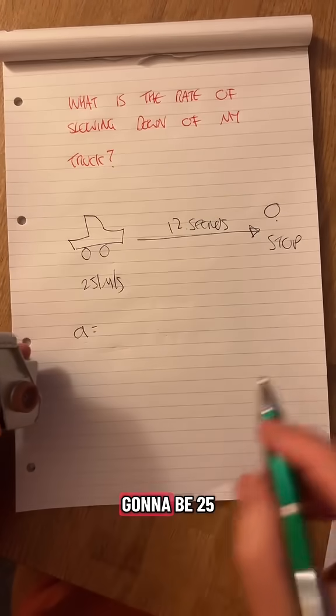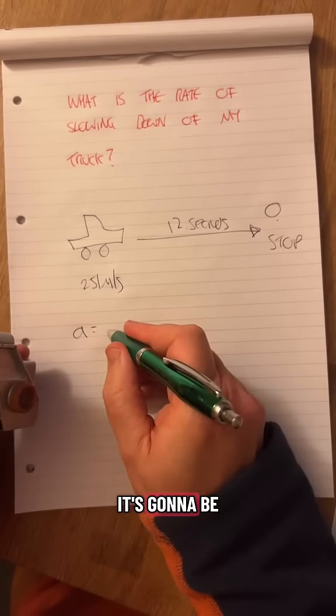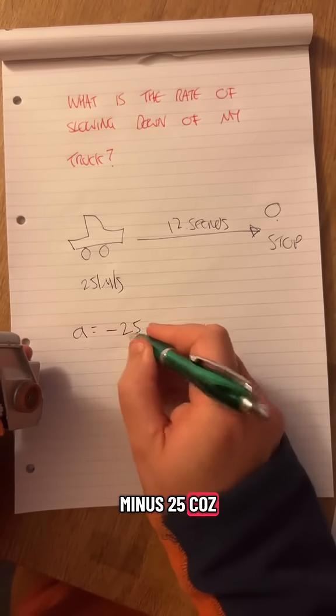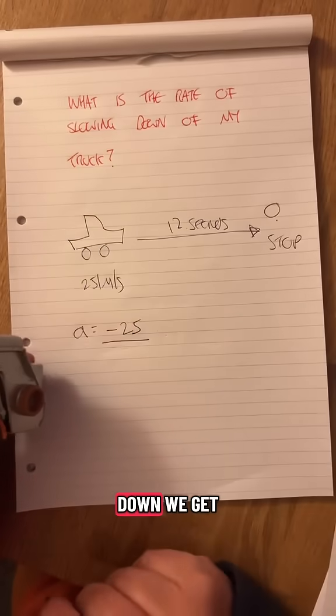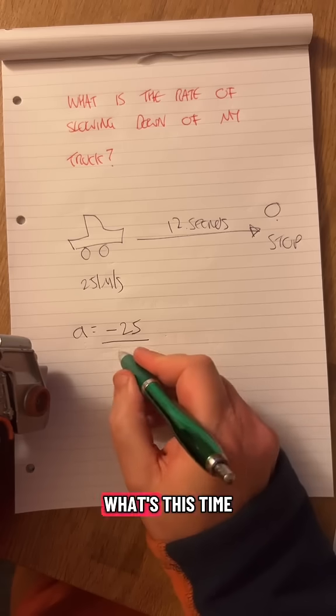The change in speed is not going to be 25. It's going to be minus 25, because it's the final minus the start. So we're slowing down, we get a negative value. What's the time? 12.